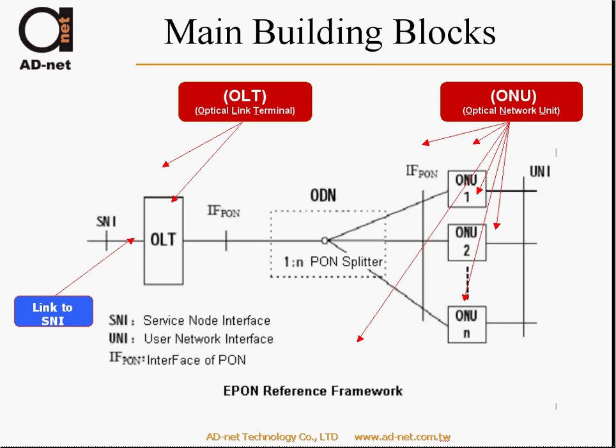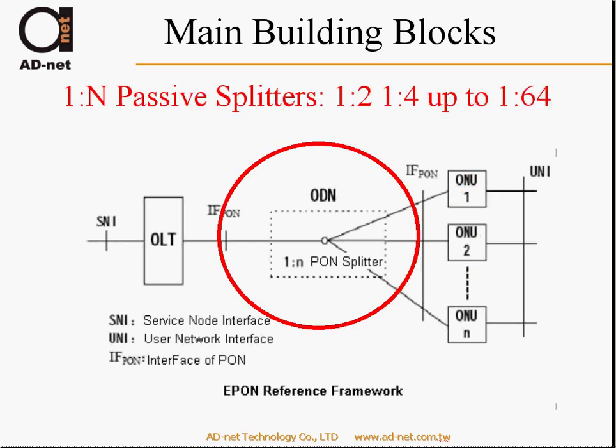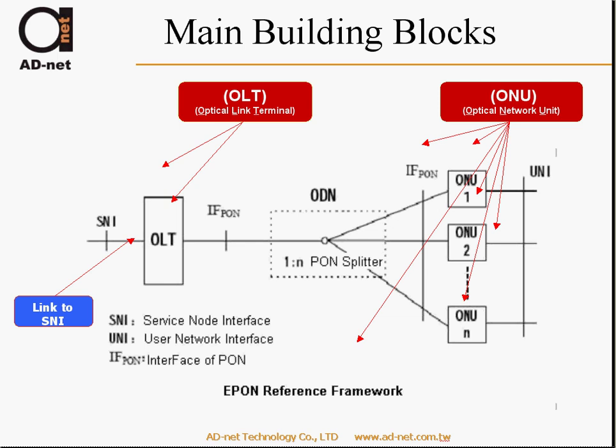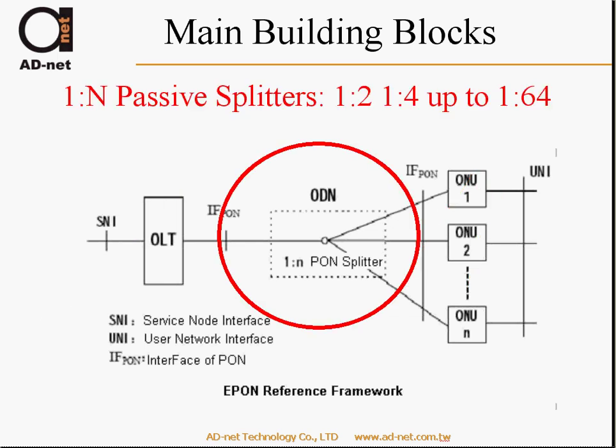Now, for the most important concept of GEPON — you can see here we have the splitters, which we talked about in the first part of the presentation. As you know, the splitters need no power, and you can have splitters starting from 1-to-2, 1-to-4, and up to 1-to-64. So the only power you will need is at the center where you have the OLT, and only at the customer flat or house where you have the ONU. The splitters require totally no maintenance and no power.